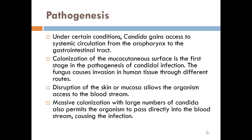Regarding pathogenesis, under certain conditions Candida gains access to systemic circulation from the oropharynx or the gastrointestinal tract. From the oropharynx, gastrointestinal tract, or genitourinary tract, Candida albicans enters the blood vessels and causes disease. Colonization of the mucocutaneous surface is the first stage in the pathogenesis of Candida infections.